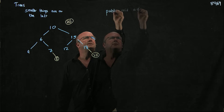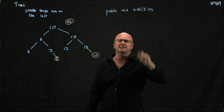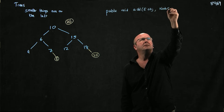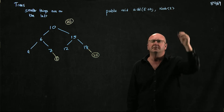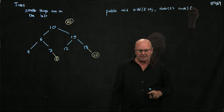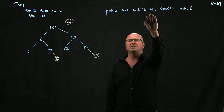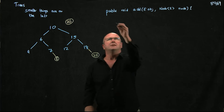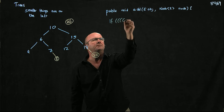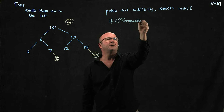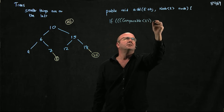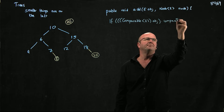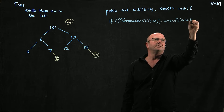Our add method is going to take an E object — that's the thing we're adding to the tree — and the other parameter is going to be a Node of type Node<E>. We're going to ask: is our object bigger or smaller than the node we're looking at? We do that using Comparable, casting the object and calling compareTo on node.data.